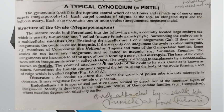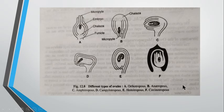To recap, we have discussed unitegmic, bitegmic, and ategmic ovules, then the chalazal end and micropilar end, and what the funicle, hilum, and placenta are. Now we should move to the types of ovule. If we look at the next slide, these are the types of ovule — there are different types.